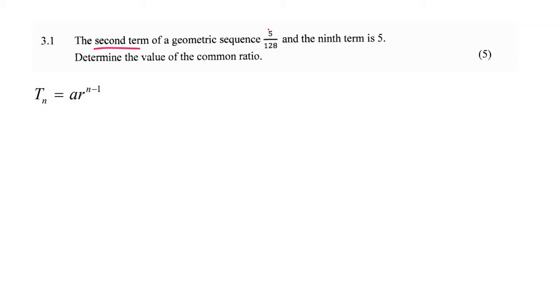They're telling us it's the second term and the answer is 5 over 128. So we have A (which we don't know) and R (which we don't know), but it's the second term, so that's position number 2. We can simplify this by saying A times R, because 2 minus 1 is 1.